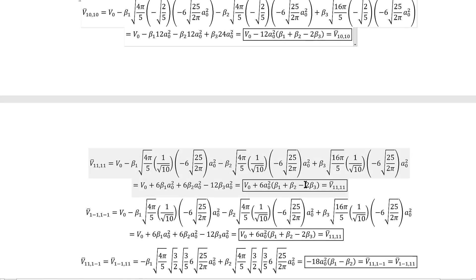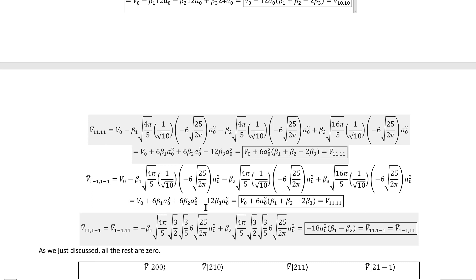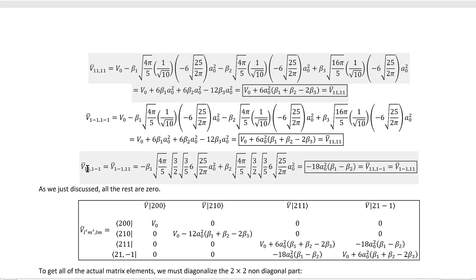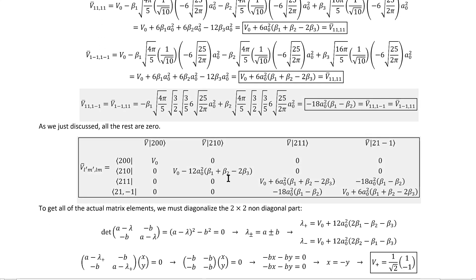Continuing on, V1, 1 ends up working out similarly, except there's a plus sign here and a factor of 6. V1, minus 1, 1, minus 1 is actually equal to V1, 1, 1, 1. Fortunately, we only have two non-zero-off diagonal elements, so we don't have to diagonalize a full 4x4 matrix, but regardless, either way, the actual calculation is essentially the same as all of the diagonal elements. And that leaves us with this complete V-bar matrix.